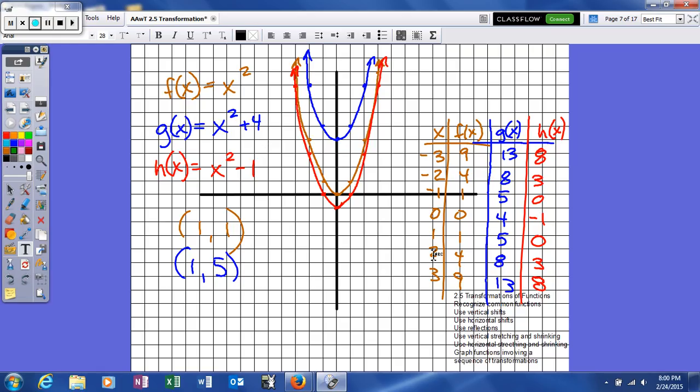If you have the ordered pair, say, 2 comma 4, that's really going to be 2 comma 3 with your h function. So we basically take our normal y values and subtract 1 from those.